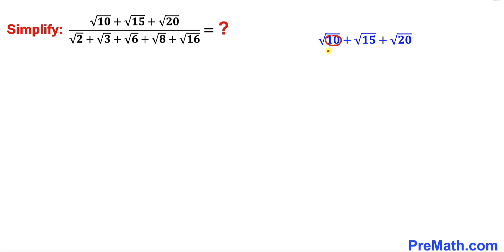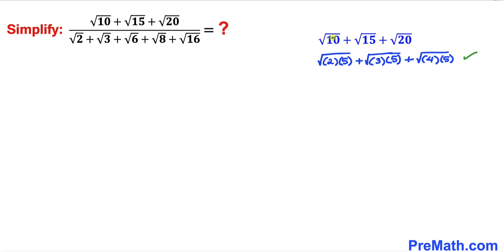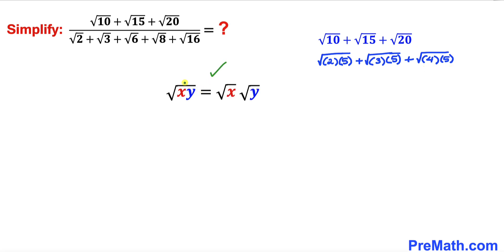We can write 10 as 2 times 5. Likewise, 15 can be written as 3 times 5, and 20 as 4 times 5. Now let's recall the basic property of radicals: the square root of x times y can be broken down to square root of x times square root of y.